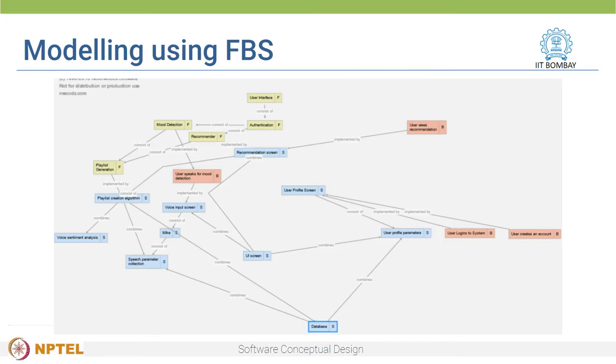We used the Think and Link learning environment to create and evaluate FBS graphs for different software design problems. In week 2, we created FBS graphs as software design solutions. But I am just wondering — how does this map to the software processes and development models that we just discussed in week 1?